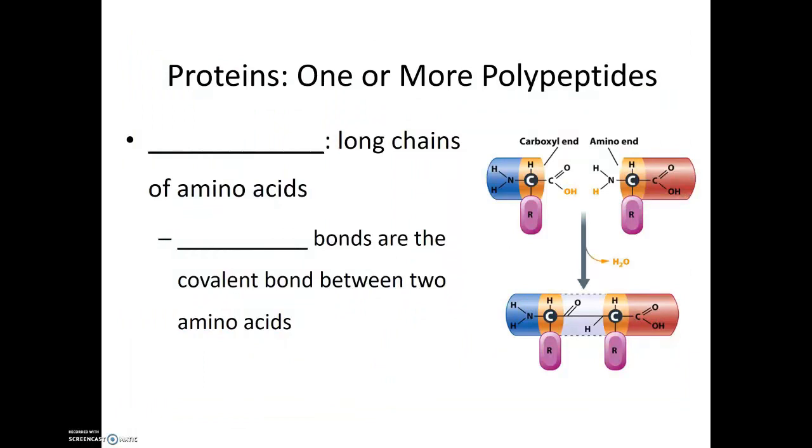These amino acids are connected to each other through a dehydration synthesis reaction, just as with the other macromolecules. Now the name of the covalent bond that forms between two amino acids is known as a peptide bond, and so a series of amino acids connected together in a long chain is known as a polypeptide. And that prefix poly meaning many, and in this case peptide referring to those peptide bonds. A protein is actually made of one or more polypeptide chains associated with each other.